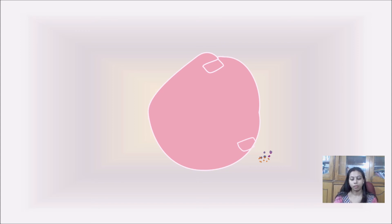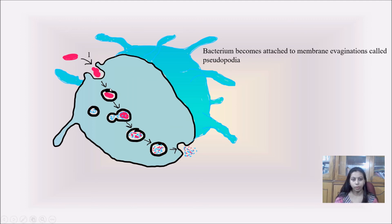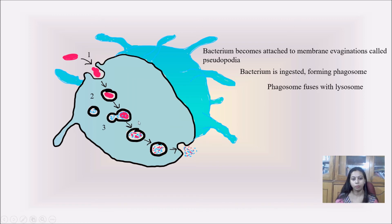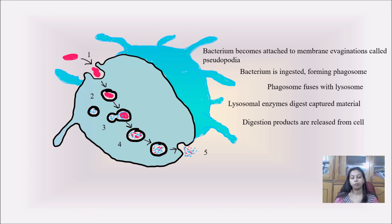To summarize the overview: first, bacteria attach to the membrane invagination called pseudopodia. Next, the bacteria are ingested forming phagosomes. Then the phagosome fuses with the lysosome to form the phagolysosome. The bacteria are digested by the digestive enzymes secreted by the lysosomes. Finally, the digestive products are taken out by the help of MHC class molecules, which express the digested particles to cytotoxic T cells or helper T cells for a proper immune response.